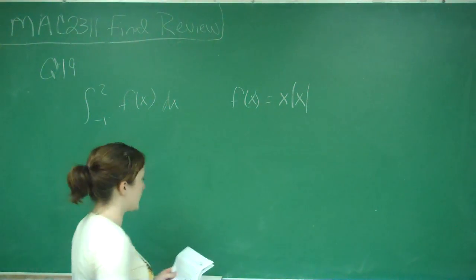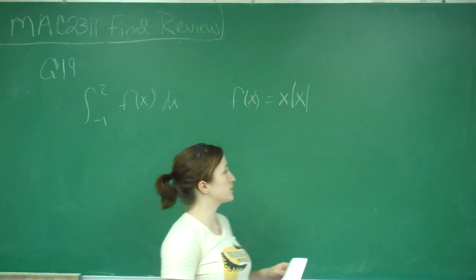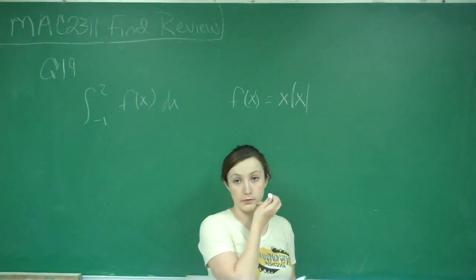This is question number 19 and it says evaluate the integral from negative 1 to 2 of f of x dx where f of x is equal to x times the absolute value of x. And it gives us a hint to rewrite the function without the absolute value.